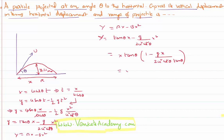Rearranging the terms: x tan θ (1 - gx / (2u² cos² θ)). Tan θ can be written like sin θ / cos θ, one cos θ can be cancelled. By simplifying this further...